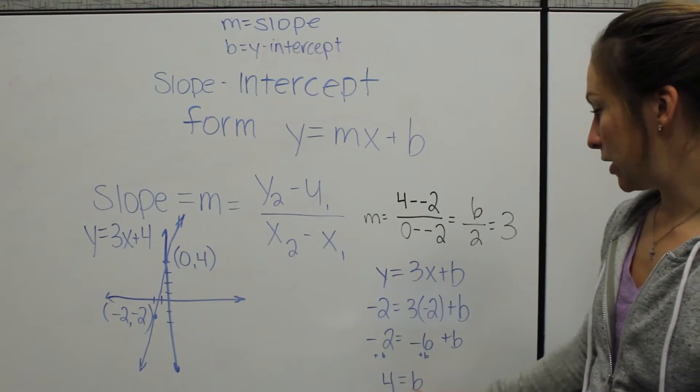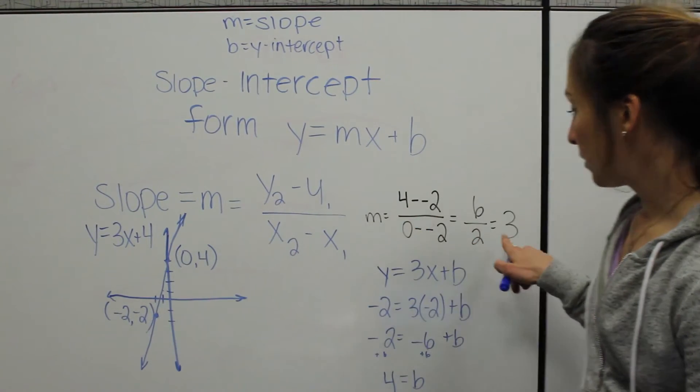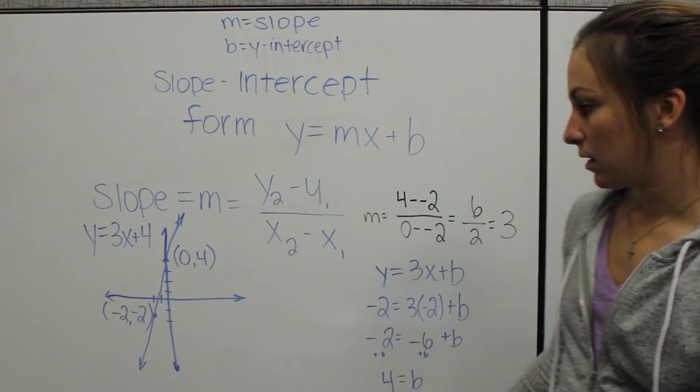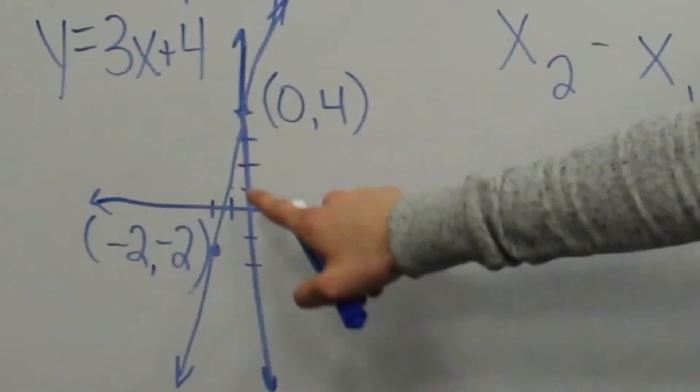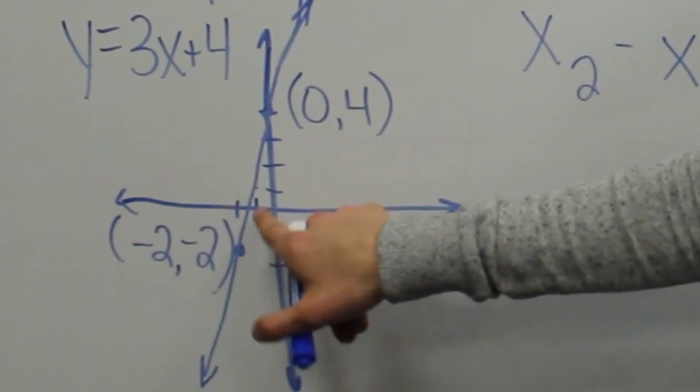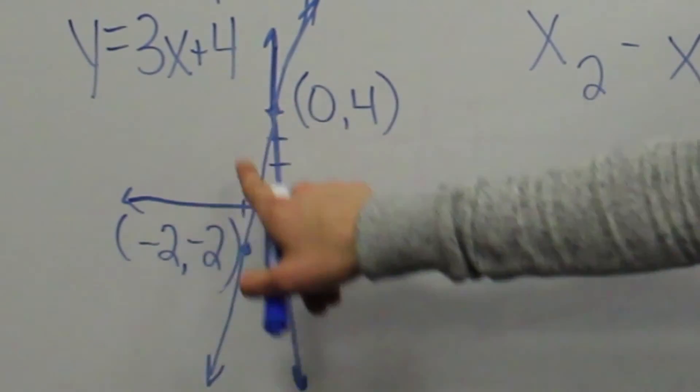Now we have our final equation of y equals 3x plus 4, which as you can see on our graph, gives us the slope, rise over run, and the y-intercept, which was at 0, 4.